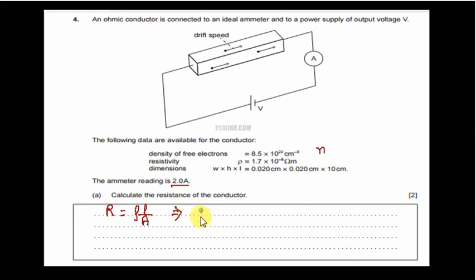The resistance is rho, that is 1.7 into 10 to the power minus 8, into L, the length of this conductor is 10 centimeter, so you would write it as 10 into 10 to the power minus 2 to convert it into meters, upon the area.